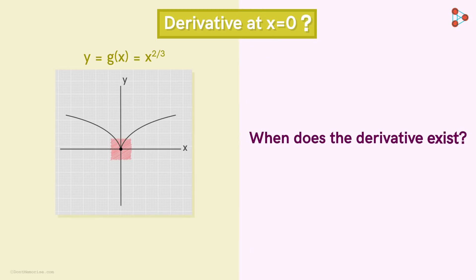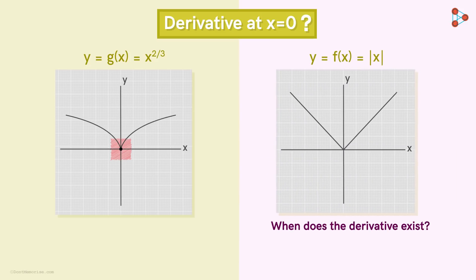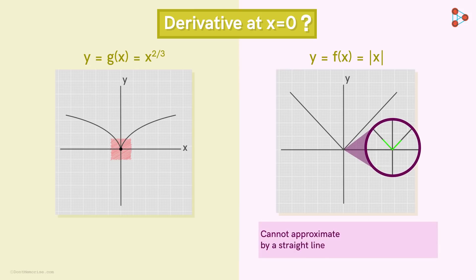In the previous video, we saw how we can intuitively understand whether the derivative exists or not at a point just by looking at a function's graph. If after zooming around that point, the graph doesn't look almost like a straight line, then we know that the derivative does not exist at that point.